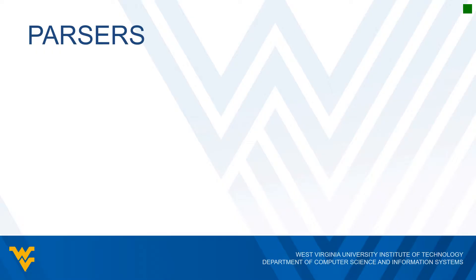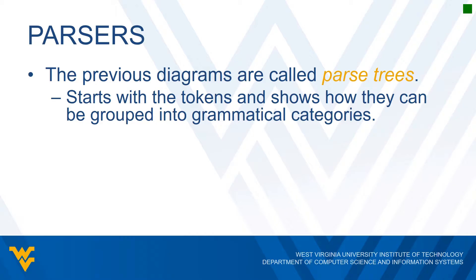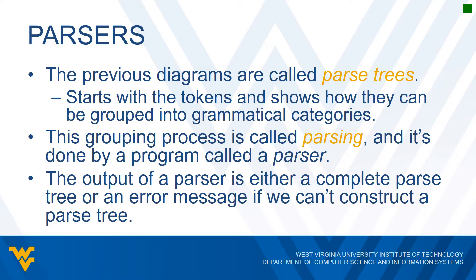The previous diagrams we showed are called parse trees. These start from the individual tokens in the statement, and then show how these tokens can be grouped together into predefined grammatical categories — categories that depend on the rules of the grammar. The successful construction of a parse tree is proof that a statement is correctly formed according to the rules of the language. If a parser cannot produce such a parse tree, then the statement is not correctly formed. The process of diagramming a high-level language statement is called parsing, and it's done by a program called a parser. The output of a parser is either a complete parse tree or an error message.